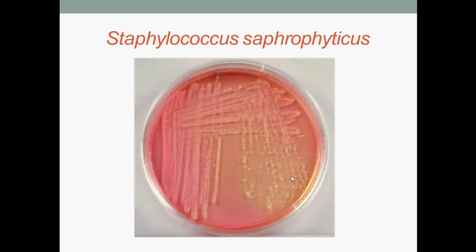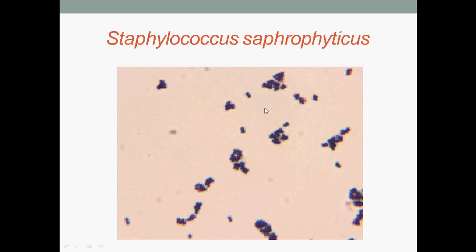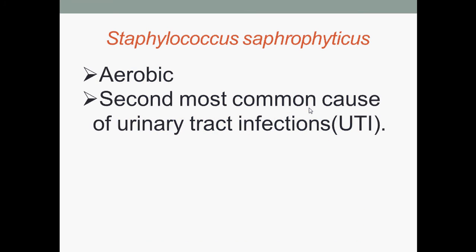Here we have Staphylococcus saprophyticus growing on mannitol salt agar. Staphylococcus saprophyticus under microscopic view. Staphylococcus saprophyticus are aerobic. They are the second most common cause of urinary tract infections, UTI.